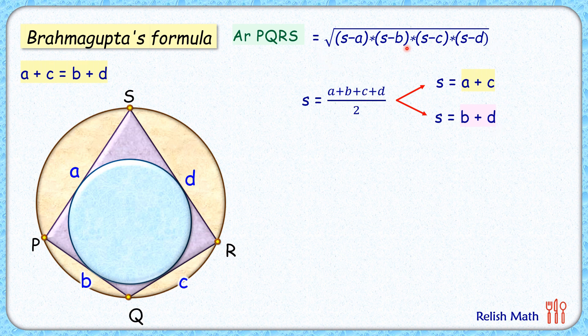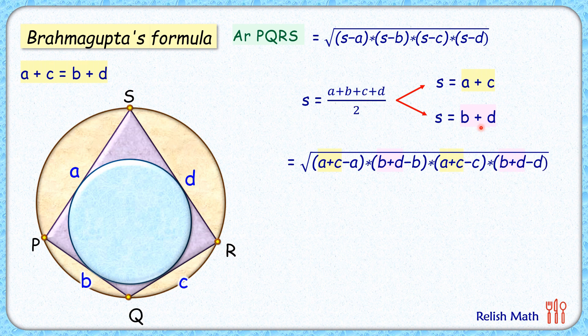In the area formula, let's replace s with a+c at two positions (s-a) and (s-c), and replace s with b+d in the remaining two positions. When we simplify, a, b, c, and d all cancel out, so the area is simply the square root of the product abcd.